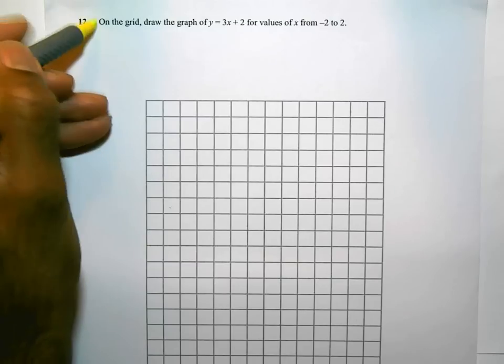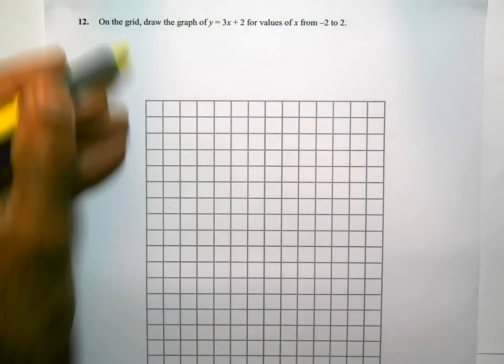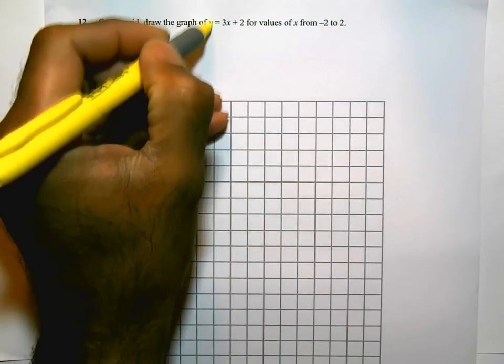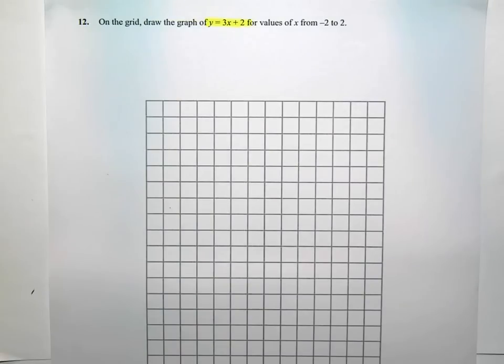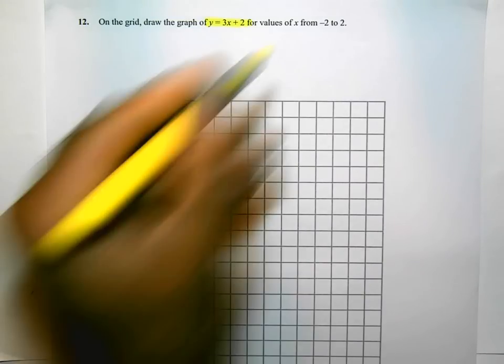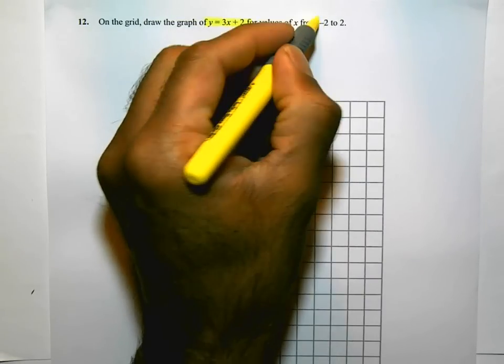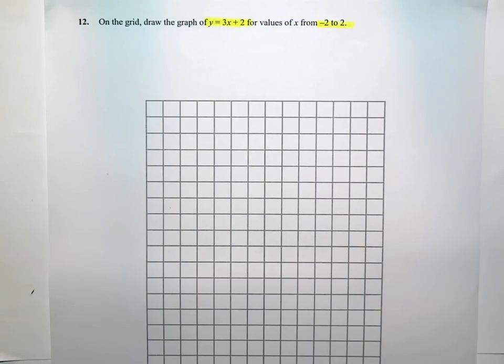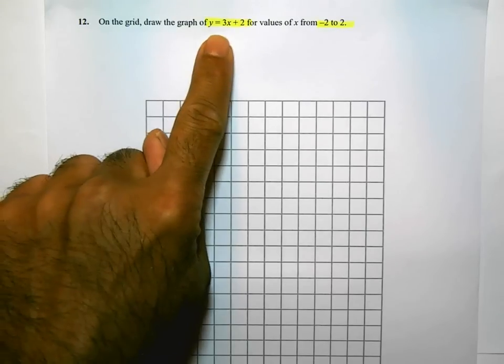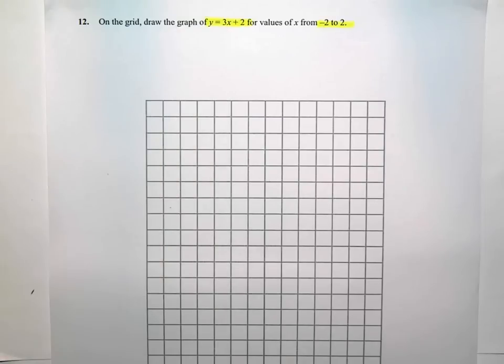So it says on the grid below, draw a graph of y equals 3x plus 2 for the values of x from minus 2 to plus 2. We know from looking at the equation, because it's 3x plus 2, because it goes up to just x, that means it's a straight line graph.